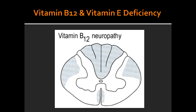What are some of the signs of vitamin B12 or vitamin E deficiency? Some of the signs include ataxic gait, paresthesia, impaired position, and vibration senses. Paresthesia is defined as an abnormal sensation, typically tingling or pricking.